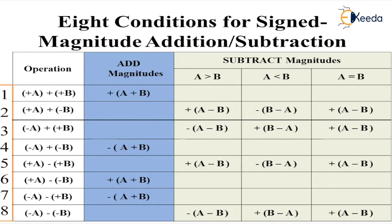This table is important for sign-magnitude addition and subtraction because certain conditions — greater than, less than, equal to — are laid out clearly. You have to change the sign accordingly depending on what operations A or B are doing. For example, if A is greater than B and A is positive while B is negative, it will be A minus B. But if B is greater than A, you perform B minus A and the output will be negative. This is what you need to remember before performing addition and subtraction of magnitudes.